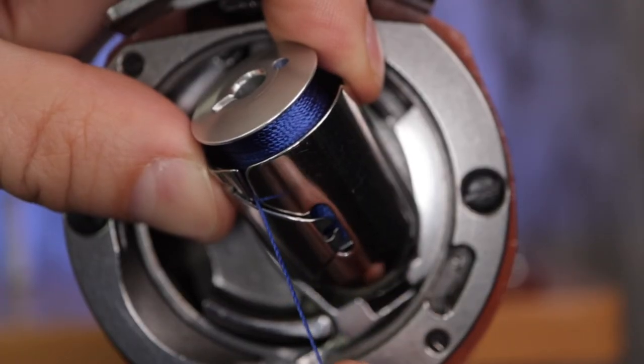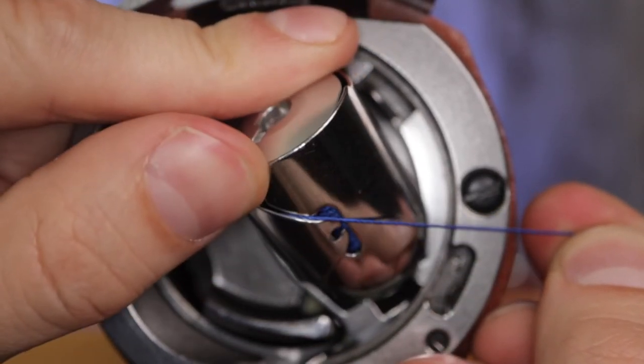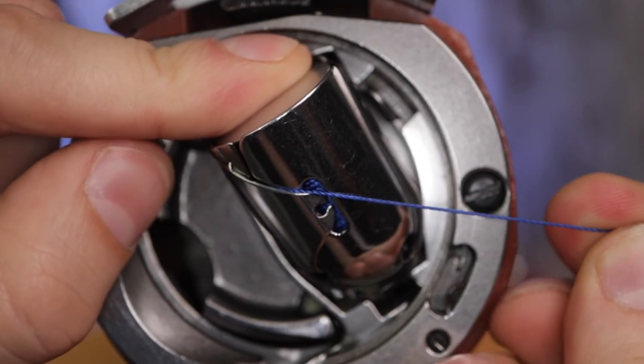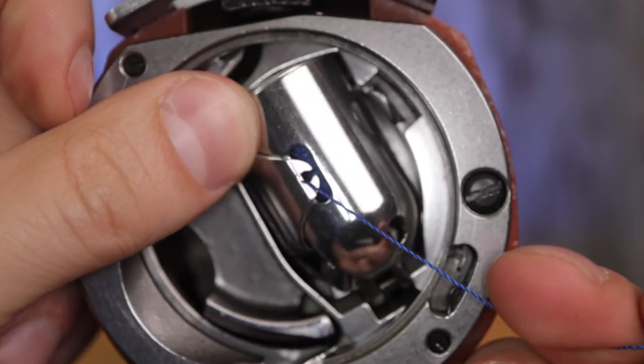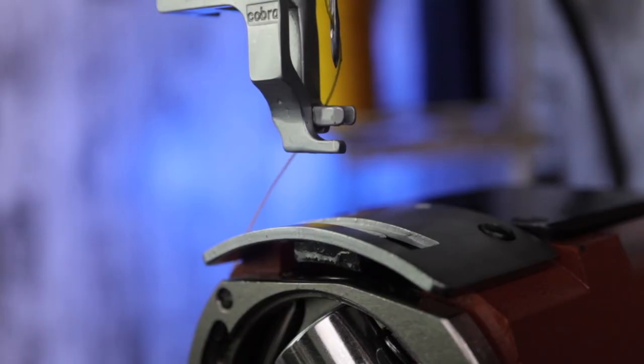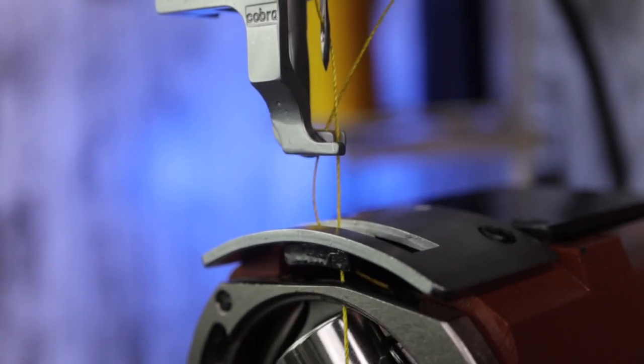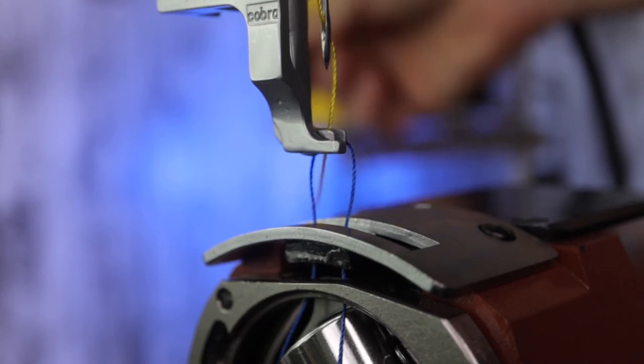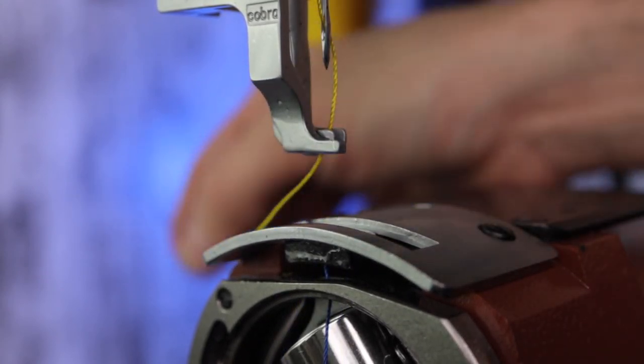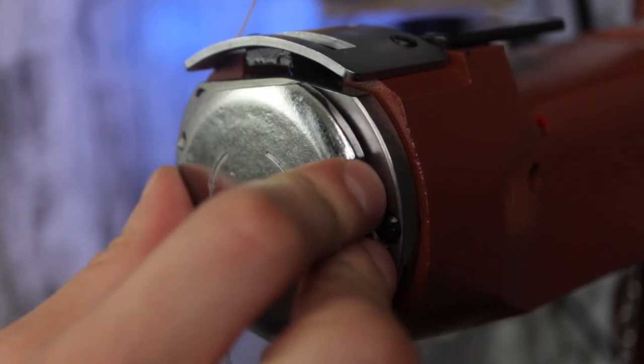Pull the thread down into the tension spring device. To pull the bobbin thread up, rotate the hand wheel and the hook and the thread will rotate and bring the bobbin thread up. Just replace the cover plate and you are ready to sew.